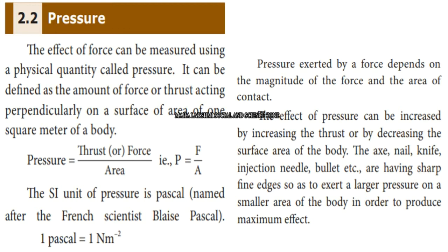In the definition of pressure, force or thrust acts perpendicular on a surface. The pressure formula is: pressure is equal to thrust or force divided by area. That is, P = F/A.